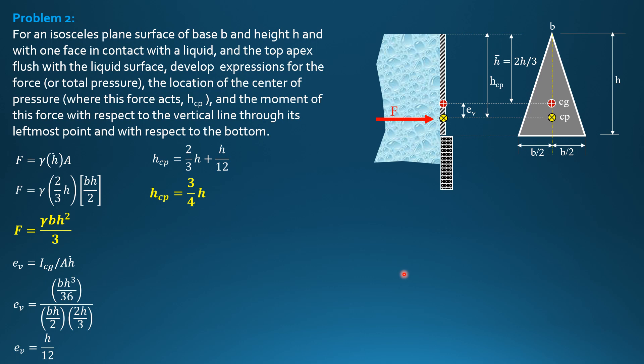Then finally, the moment expression with respect to the left. So it is just force times b over 2 from the figure. So gamma bh squared over 3 times b over 2 is gamma b squared h squared over 6. And the moment of that force about the bottom, since hcp is three-fourths of h. So h minus three-fourths of h is h over 4. So this is h over 4. So moment about the bottom is gamma bh squared over 3 times h over 4. And that is equal to gamma bh cubed over 12. So that's it.